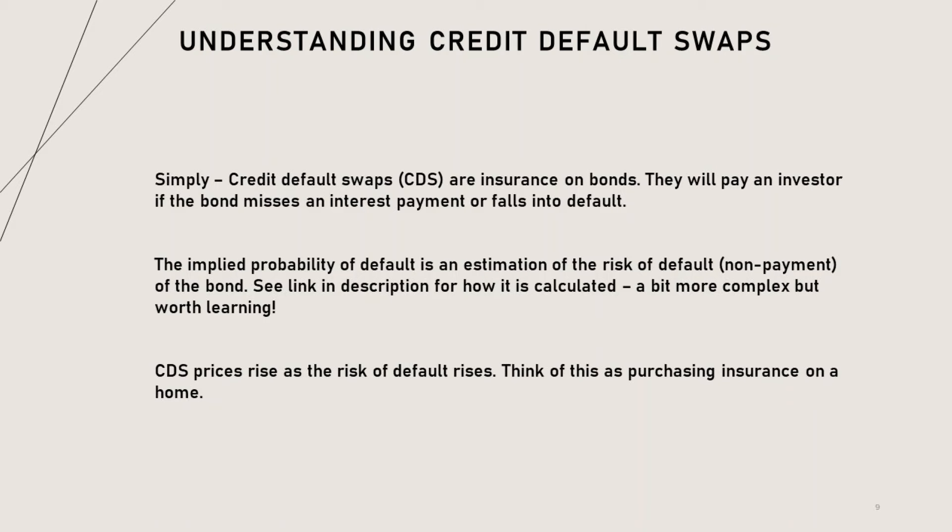Think of this as purchasing insurance on a home. If your home is in an area that experiences floods, robberies, forest fires, and tornadoes, your insurance premiums will be high. Similarly, if your bonds are issued in a country with disorder, the CDS prices are likely to be high. So what are the CDS issuers — that's the insurance companies — saying about Ukraine and Russia?